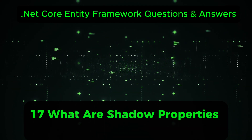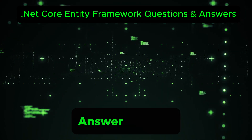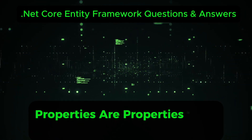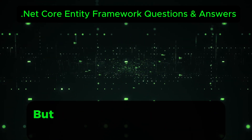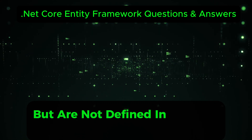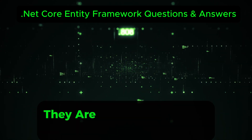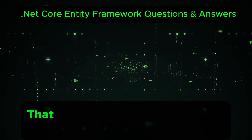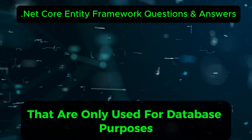What are shadow properties in EF Core? Shadow properties are properties that exist in the model but are not defined in the .NET class. They are useful for adding properties that are only used for database purposes.